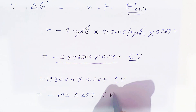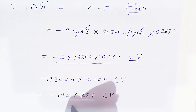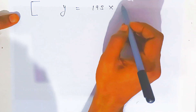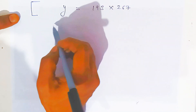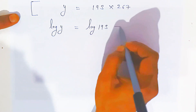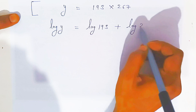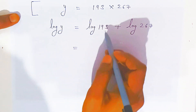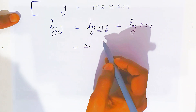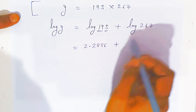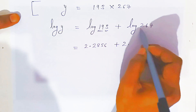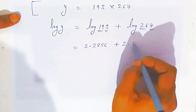Taking log on both sides: log y equals log 193 plus log 267. For log 193, the characteristic is 2 (three digits minus one); in the log table row 19, column 3, the mantissa is 2856. For log 267, the characteristic is 2; in row 26, column 7, the mantissa is 4265.